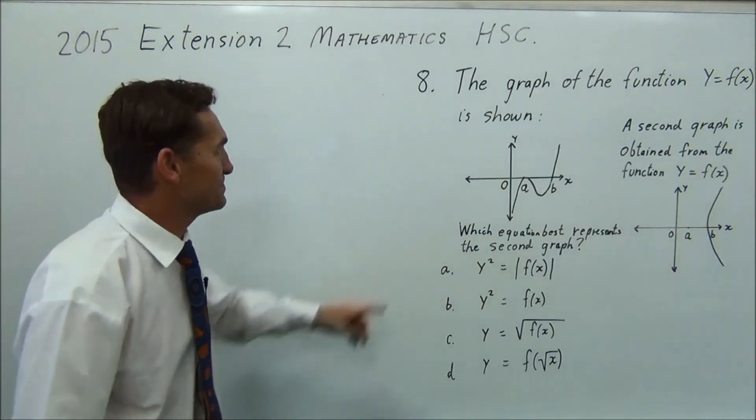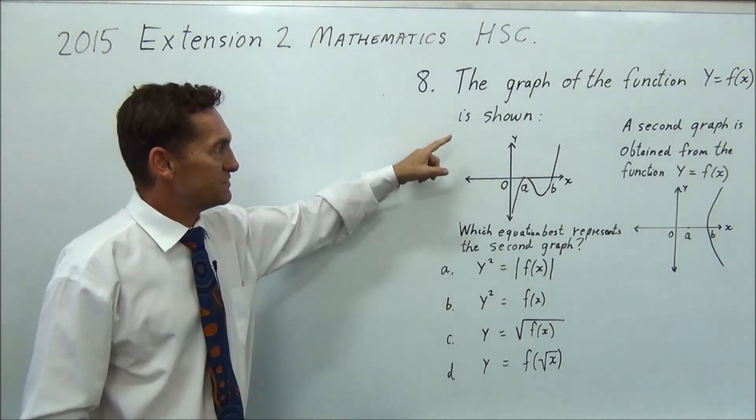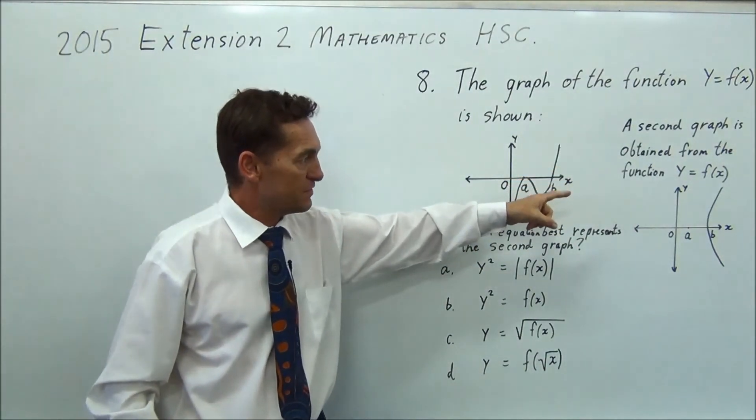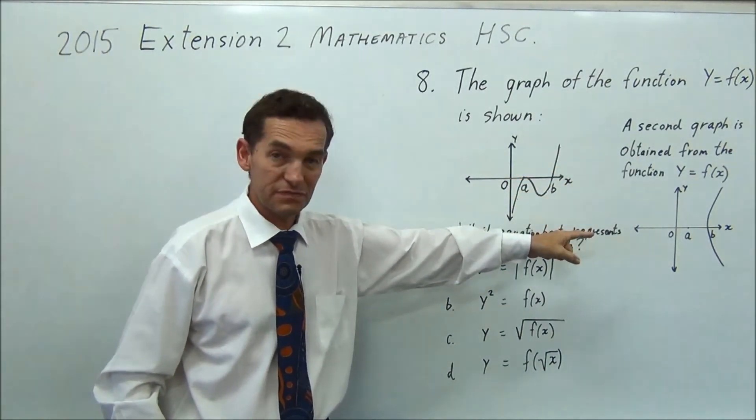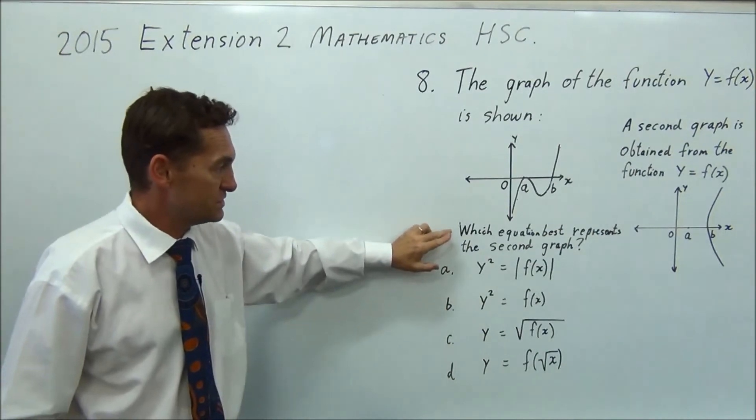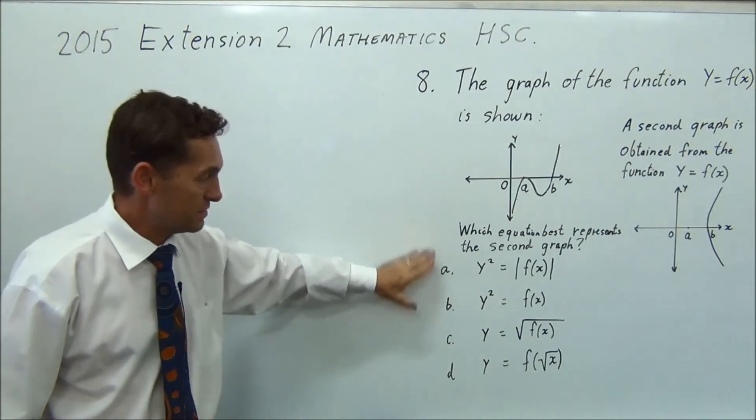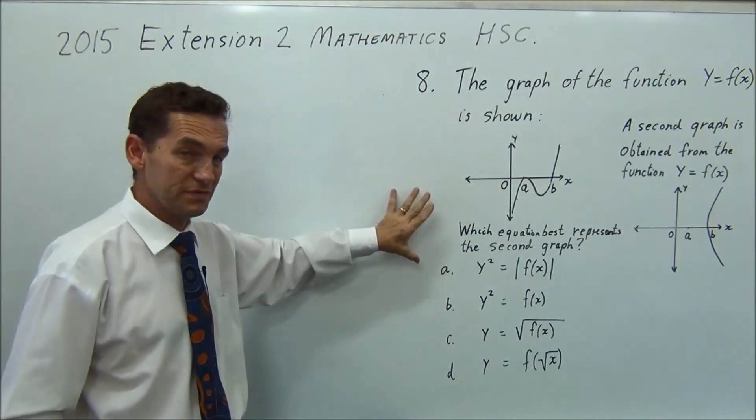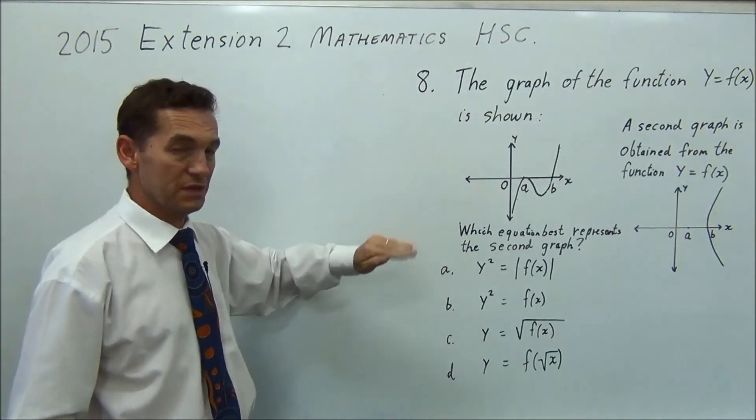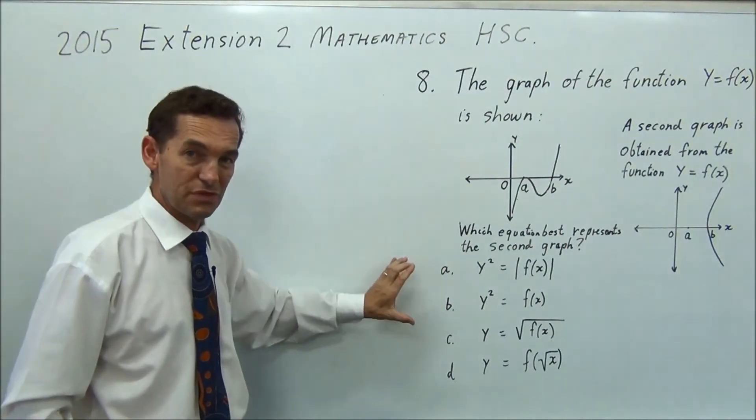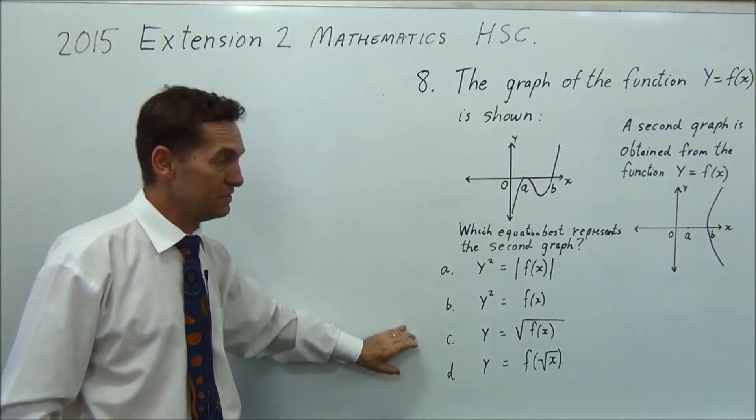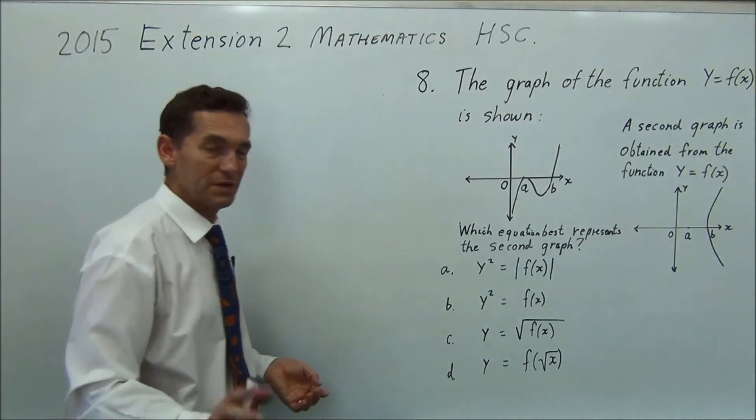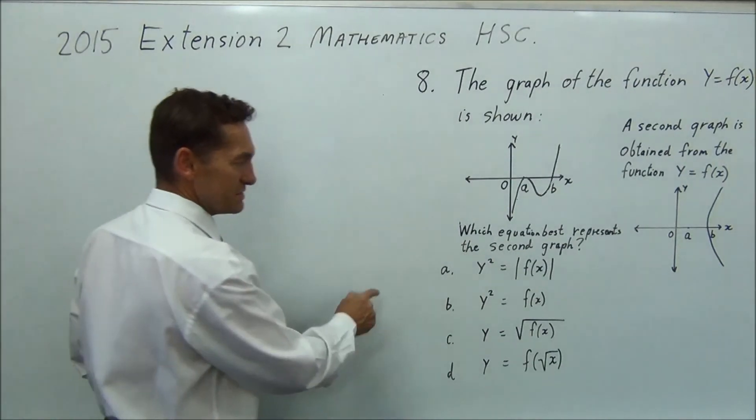G'day again. Question 8. The graph of the function y equals fx is shown, and they show you this diagram. The second graph is obtained from the function y equals fx, and they give you that diagram. Which equation best represents the second graph? And gives you a bunch of choices. I think this is a fairly difficult question, and I would do it by elimination. I'll tell you what I think or how I would think in the exam, and then I'll do some corrections.